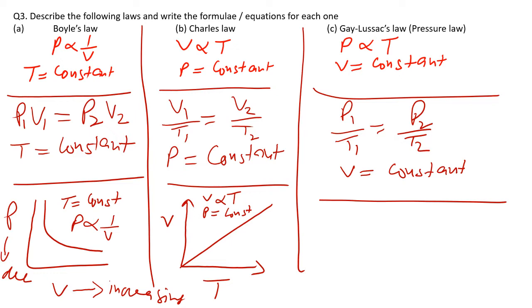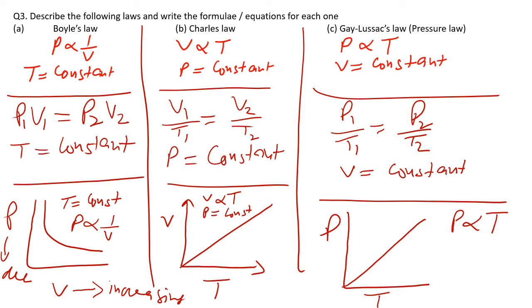For Gay-Lussac's Law, the graph has pressure on the y-axis and temperature on the x-axis, and the shape is a straight line. This means if the temperature is increasing, the pressure will also increase. The pressure is directly proportional to the temperature when the volume of the gas is constant.